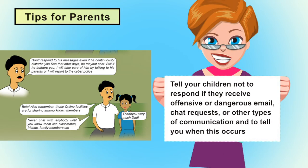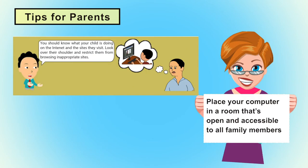Establish clear ground rules for internet use within your family. Tell your children not to respond if they receive offensive or dangerous emails, chat requests, or other types of communication, and to tell you when this occurs. This often happens with children online as they receive various friend requests and emails, some of which may contain obscene content. Place your computer in a room open and accessible to all family members for better visibility of your children's online activity.